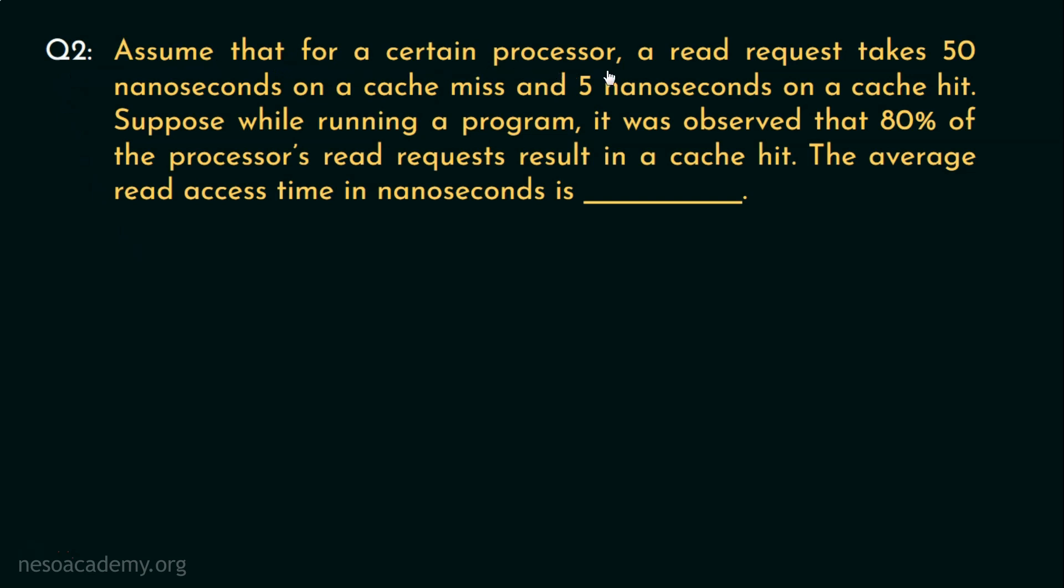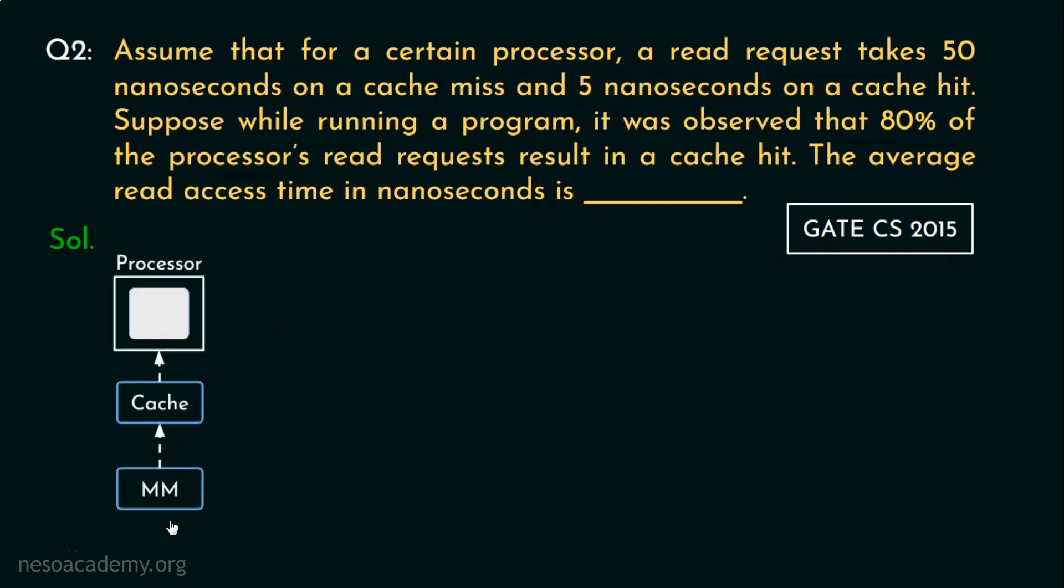Assume that for a certain processor, a read request takes 50 nanoseconds on a cache miss and 5 nanoseconds on a cache hit. Suppose while running a program, it was observed that 80% of the processor read requests result in a cache hit. We are to find out the average read access time in nanoseconds for this question. Now, it was asked in GATE CS 2015 paper and it is clearly talking about the level-wise organization. How so? Let's consider the access times. A read request takes 50 nanoseconds during cache miss.